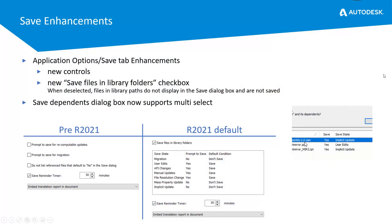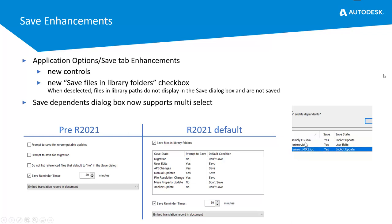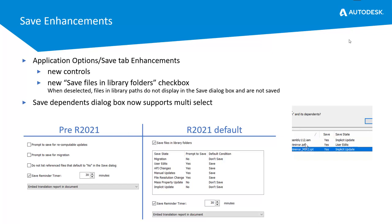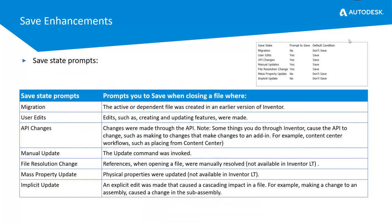Moving on, there are some save enhancements. There are new controls so you can actually choose which files you want to save. There's also a 'save files in library folders' option — when deselected, files in library paths are not displayed in the save dialog box and are not saved. You can now also multi-select files in the file dialog box, and the save state prompts show options for migration, user edits, API changes, manual update, file resolution changes, mass property updates, and implicit updates.